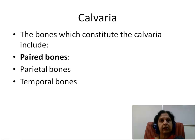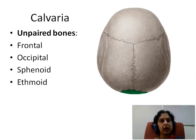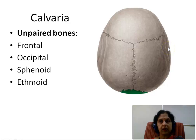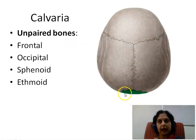Calvaria: bones which constitute the calvaria include paired bones, that is the two parietal bones and the two temporal bones, while unpaired bones are the frontal bone, sphenoid, and ethmoid bones. What we see here is the calvaria, a superior view of the skull cap. We see the two parietal bones and the two temporal bones, which are the paired bones, while the unpaired bones are the frontal bone in the anterior aspect and the occipital bone which is posteriorly placed.